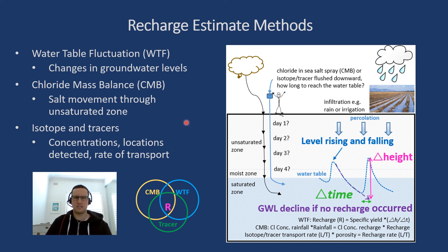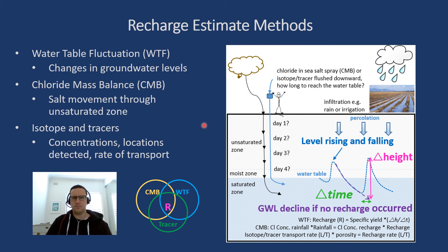The last method is isotopes and tracers. A tracer is a detectable substance, and you detect its locations over time to give you a rate. You multiply that by porosity to give you the flux — the recharge rate as a length per time. Isotopes such as Oxygen-18, which is present in water, can also be used as tracers to identify locations of recharge and trends — where is the groundwater coming from. For example, a tracer released at day one reaches further locations by day two, three, four, tracing the downward vertical movement of water recharging the aquifer.